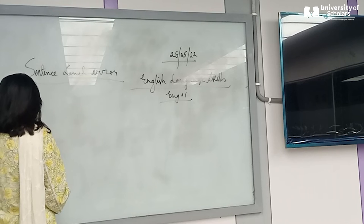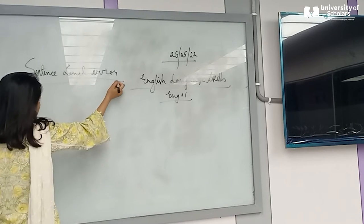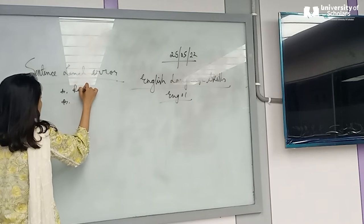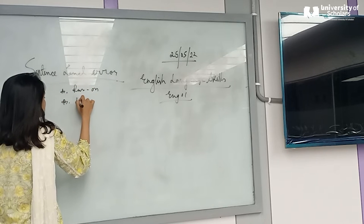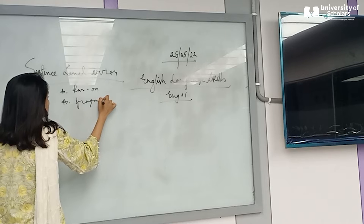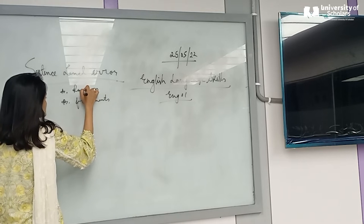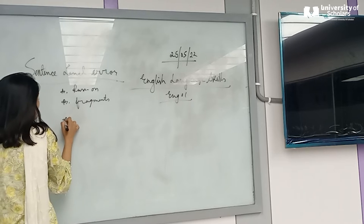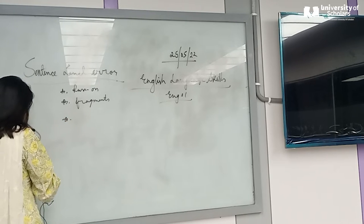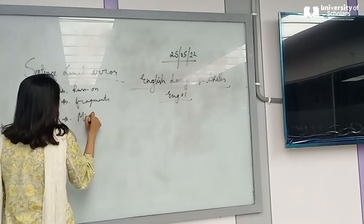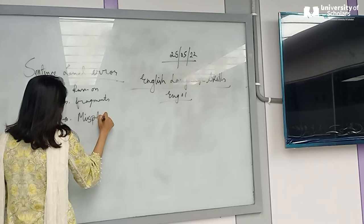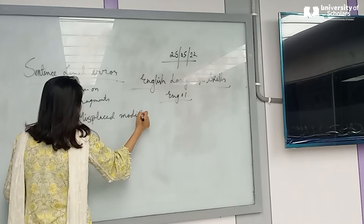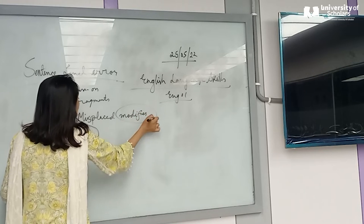Remember that we did sentence-level errors and we talked about two of them — run-ons and fragments. We did a little review yesterday, and there is another kind of mistake we do: the misplaced modifier.